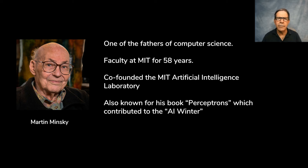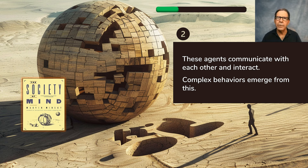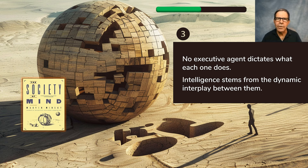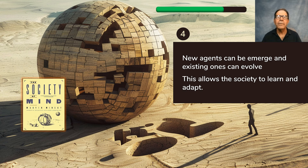Minsky's book has four key ideas. First, he proposes a theoretical framework for an intelligent system where individual agents are specialized — each one performs its own task like perception or reasoning. Although each module can be quite simple, there are many modules. Second, these agents communicate with each other and influence each other in various ways, and complex behaviors emerge from those interactions.